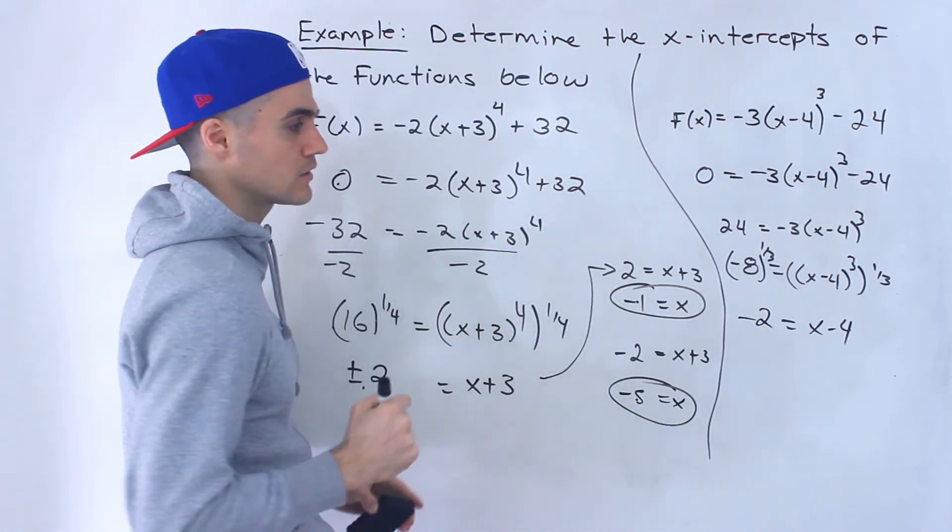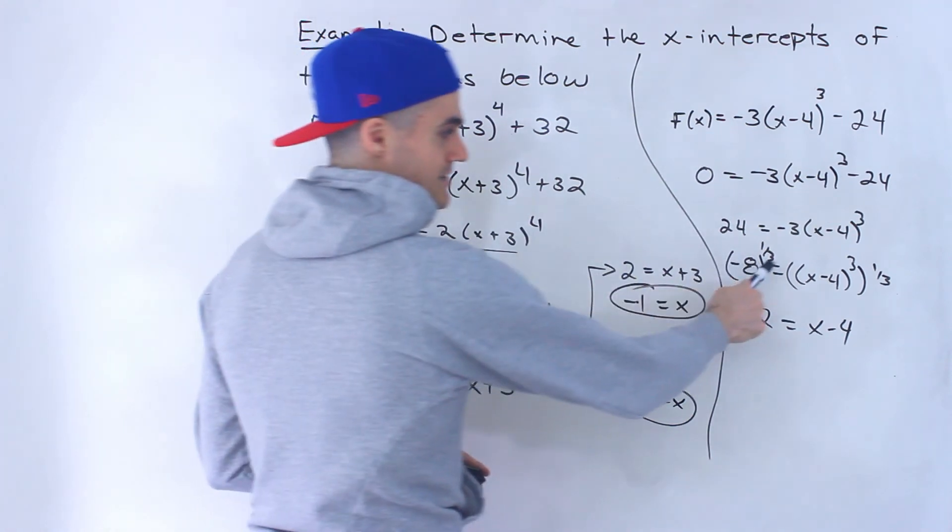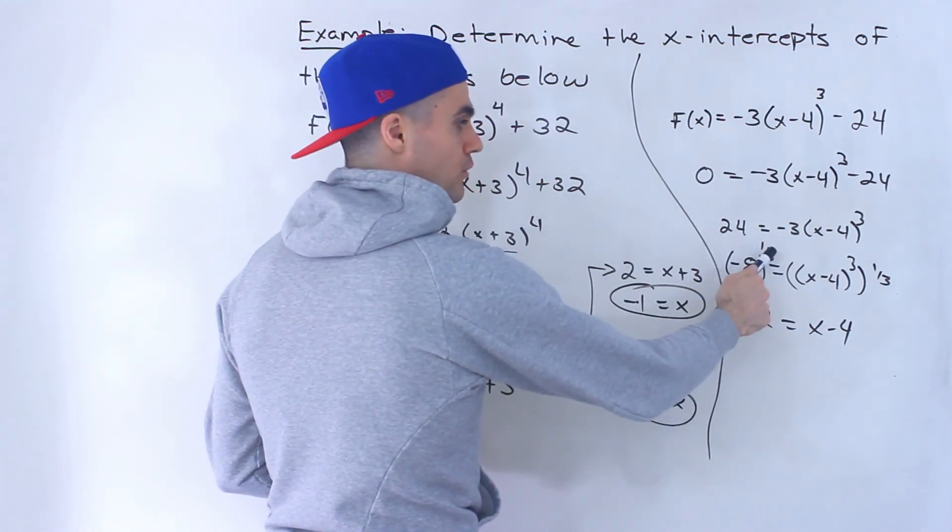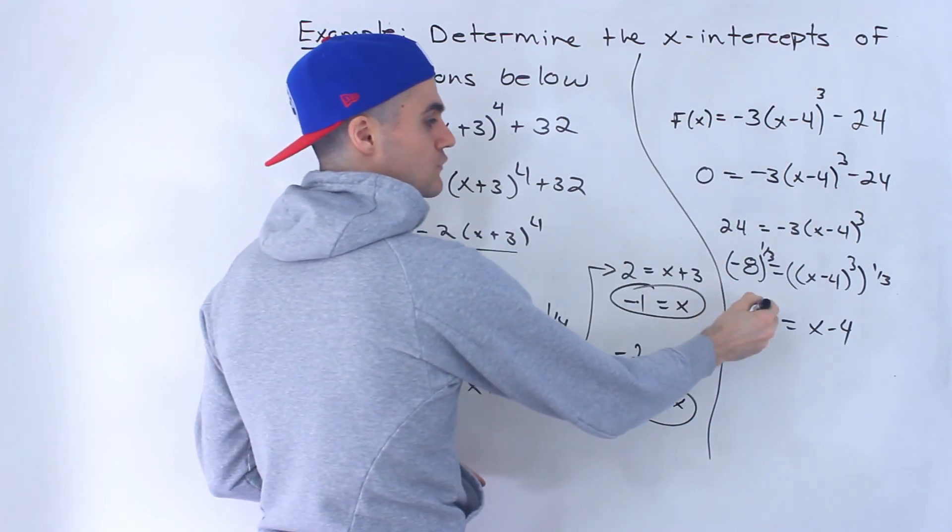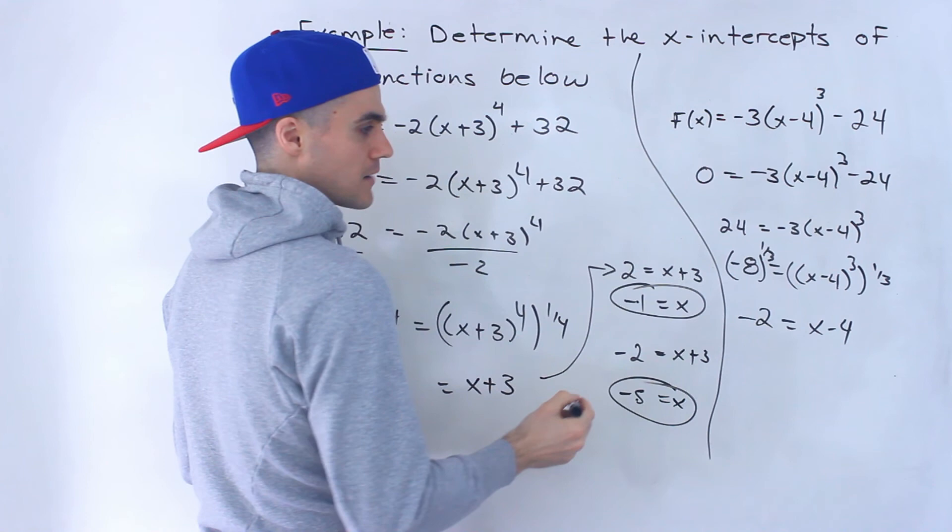And that's why there's always only one x-intercept because an odd root, or the 3rd root, since we're dealing with x^3, it's always going to give you one value here all the time.